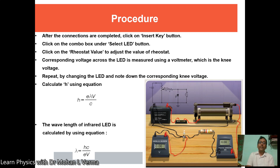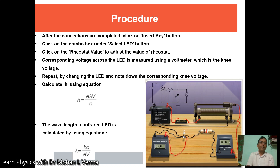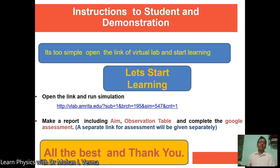That will be the knee voltage when the LED starts glowing. Repeat by changing the LED and note down the corresponding knee voltage. One can plot knee voltage versus wavelength of light. Using the formula h = eλV/c for a particular wavelength, or by finding the slope S from the plot, one can calculate h. The wavelength of an infrared LED can also be calculated using λ = hc/eV.